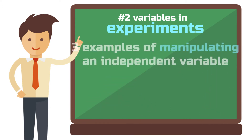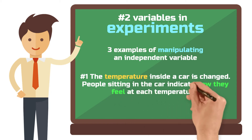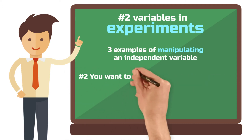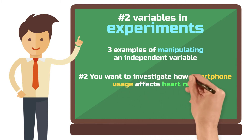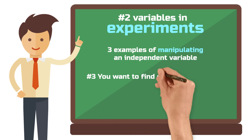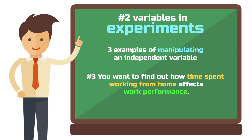Let's look at three examples. Example 1: For an experiment, the temperature inside a car is changed. People sitting in the car indicate how they feel at each temperature. Temperature is the independent variable; the reported well-being of the occupants is the dependent variable. Example 2: You want to investigate how smartphone usage affects heart rate. The independent variable is smartphone usage and the dependent variable is heart rate. Example 3: You want to find out how time spent working from home affects the work performance of employees. The independent variable is time spent working from home and the dependent variable is work performance.